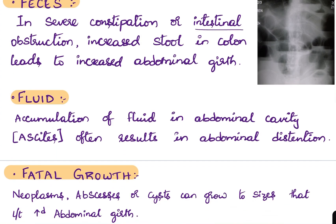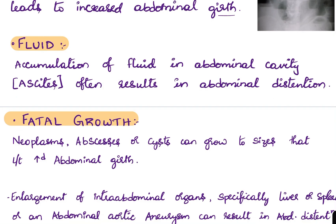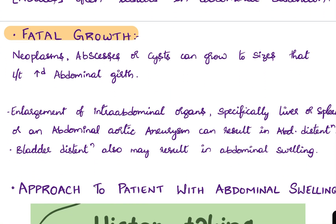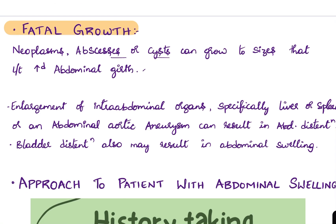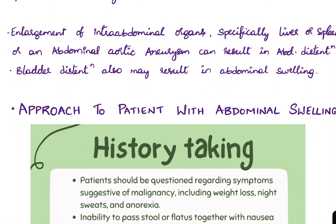The next F is fluid. Accumulation of fluid in the abdominal cavity — called ascites — often results in abdominal distension. We will discuss ascites as a separate topic. The last F is fatal growth — neoplasms, abscesses, or cysts can grow to sizes that lead to increased abdominal girth.